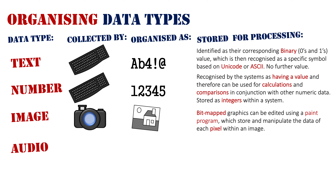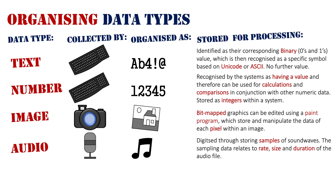Next we have audio. Audio can be captured or collected by a microphone, and then the sound is stored within the system. It is digitized through sampling of sound waves — when you speak into the microphone, it records sound waves and takes samples from them. The sample rate is how many times sampling is taken from an audio wave in order to digitize the data — the more times done, the better the quality. There's also the sample size, which is the amount of sounds available per the audio file, and the duration, which is how long the audio file will go for.